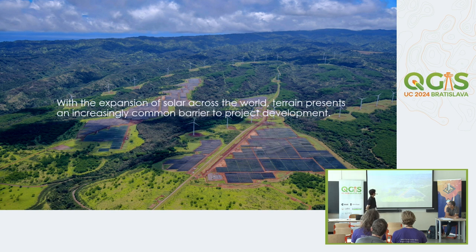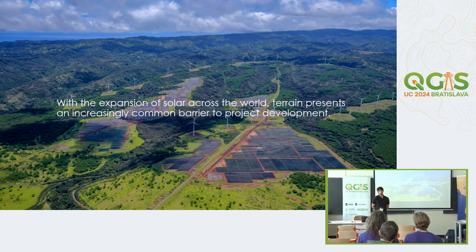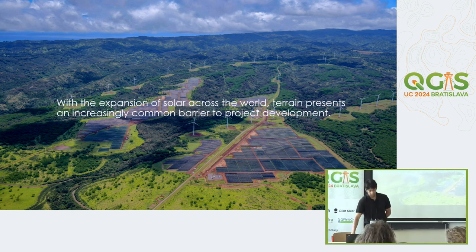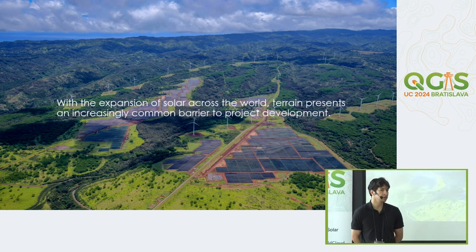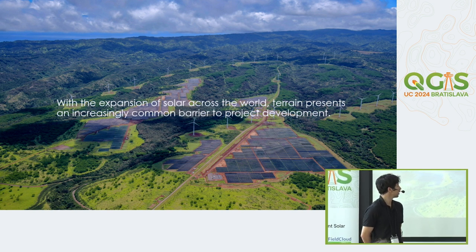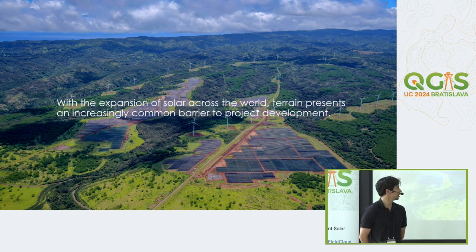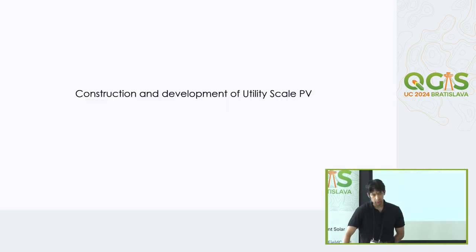With the expansion of solar across the world, terrain presents an increasingly common barrier to project development. This is a site we have in Hawaii, and as you can see there are a lot of undulations on terrain. As solar gets more popular, there is less suitable terrain, which runs into issues with civil engineering — specifically earthworks estimation, which involves calculating how much earth we need to move out of a solar site.